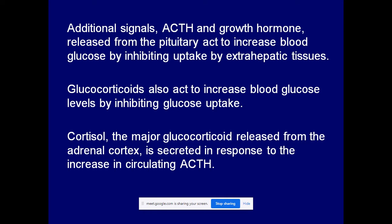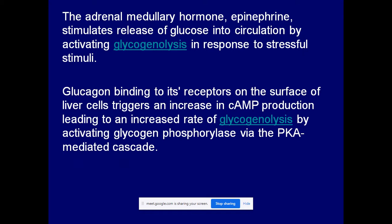Cortisol is a major glucocorticoid released from the adrenal cortex, secreted in response to increased circulation of ACTH, resulting in decreased blood glucose being brought to the normal condition. The adrenal medullary hormone epinephrine also stimulates the release of glucose into the circulation by activating glycogenolysis. Glycogenolysis means breakdown of glycogen and release of free glucose, so this activation of glycogenolysis produces free glucose that enters the blood circulation.